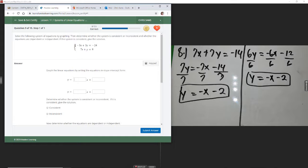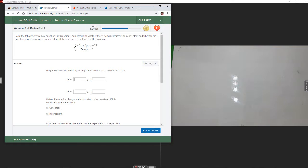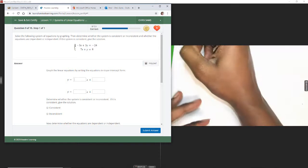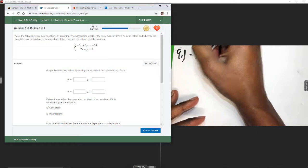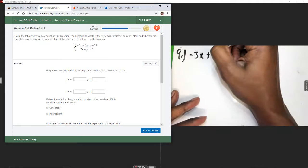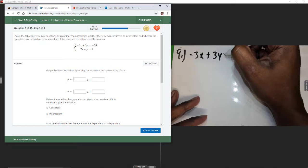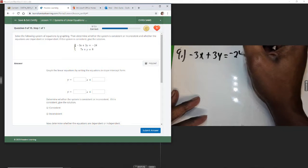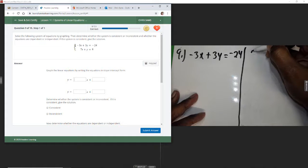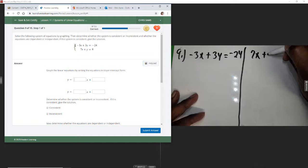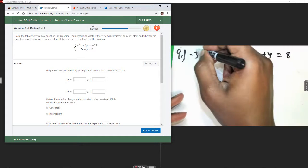Okay, number 9, we're also going to graph and then solve. We have negative 3x plus 3y equals negative 24, and then our second equation, 7x plus y equals 8.